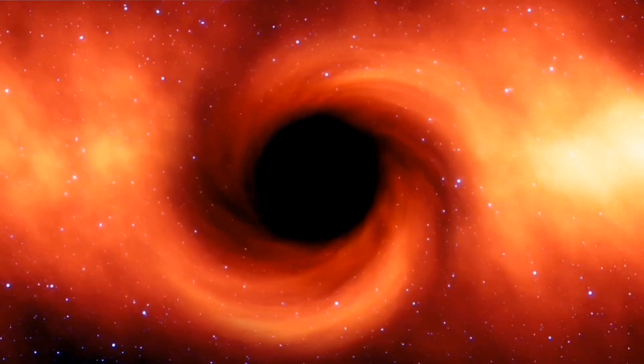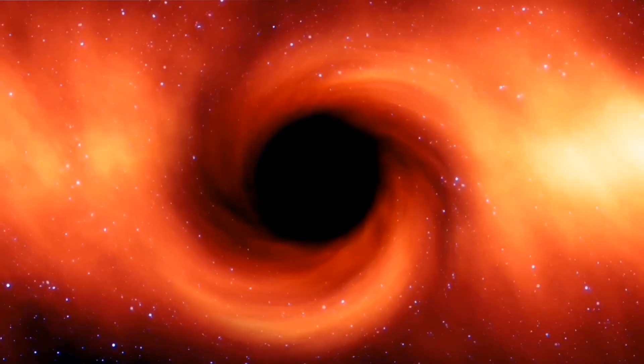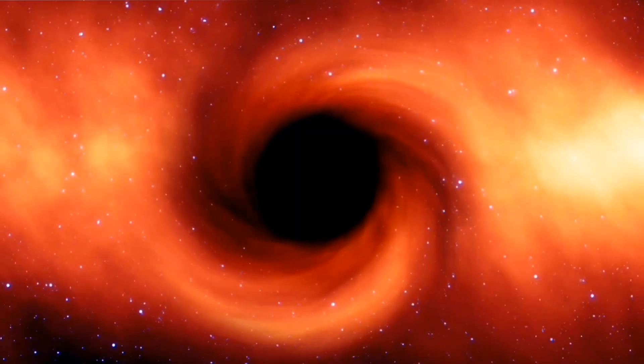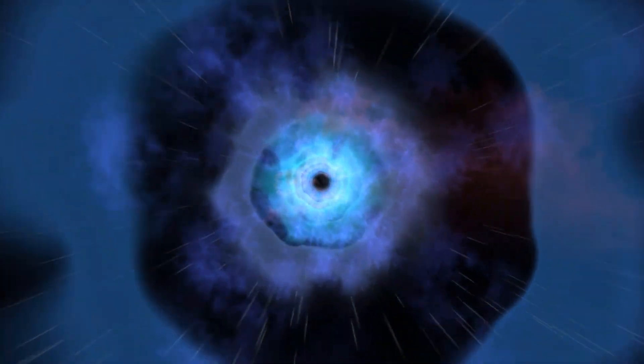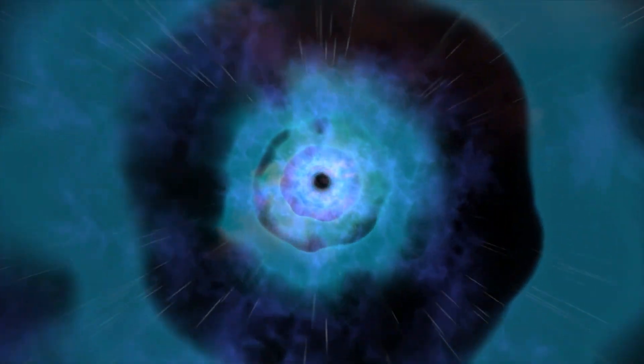Over time, the black hole could consume most of the white dwarf, leaving behind an even denser knot of material. On the other hand, it might eat the whole thing, cannibalizing its unlucky companion.